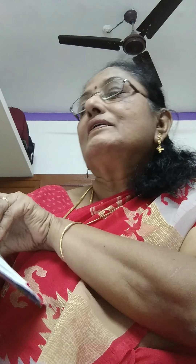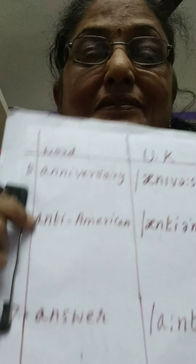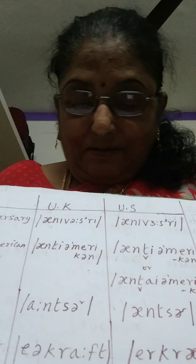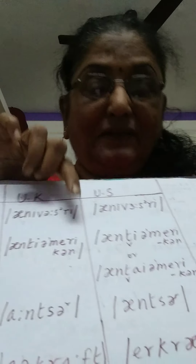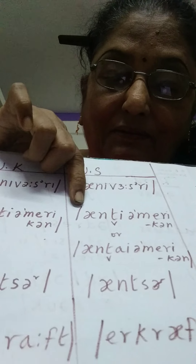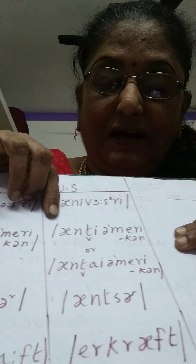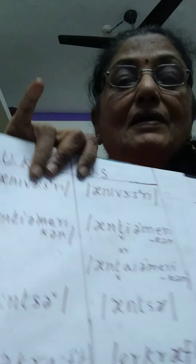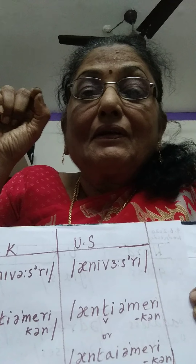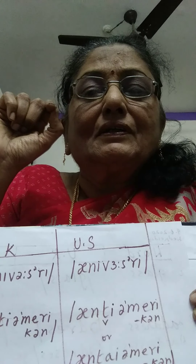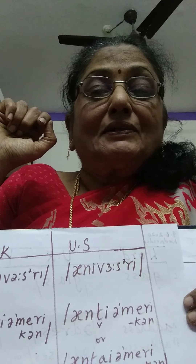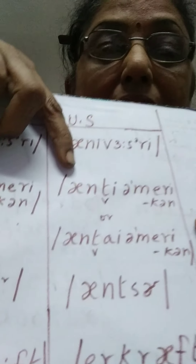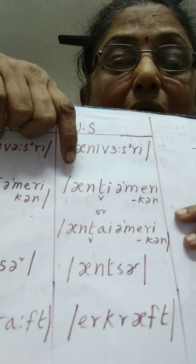The next word is 'anti-American.' The British pronounce it as 'anti-American.' Americans pronounce it as 'anti-American' — they use a soft sound for the 't.' Americans use two pronunciations: either 'anti-American' or 'anti-American.'